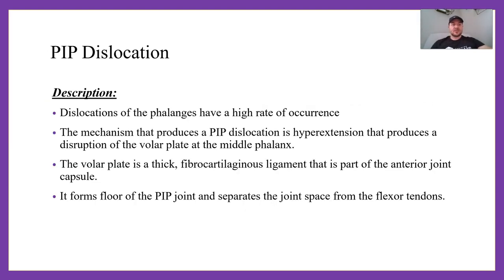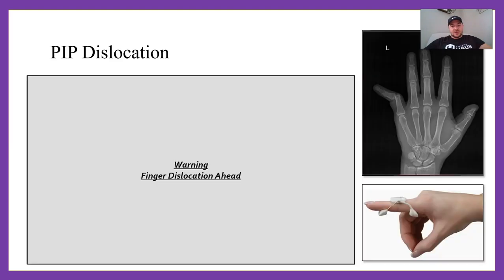The last inert/ligamentous diagnosis is PIP dislocation. Dislocations of the phalanges have a high rate of occurrence. The mechanism that produces a PIP dislocation is hyperextension, which causes disruption of the volar plate at the middle phalanx. The volar plate is a thick fibrocartilaginous ligament that forms the floor of the PIP joint and separates the joint space from the flexor tendons. Looking at the X-ray, you can see the fifth finger's proximal interphalangeal joint is not where it should be — obvious angulation.